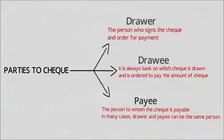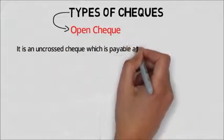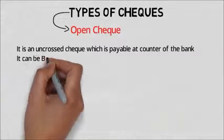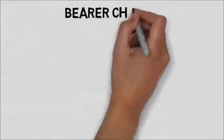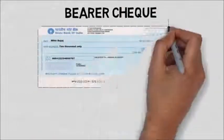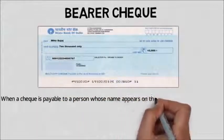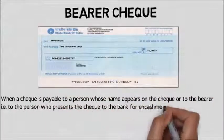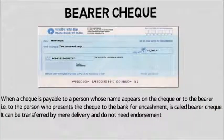There are different kinds of checks. The first one is the open check — an uncrossed check which is payable at the counter of the bank. It can be a bearer check or an order check. A bearer check is when a check is payable to a person whose name appears on the check or to the bearer — that is, the person who presents the check to the bank for encashment. It can be transferred by mere delivery and does not need endorsement.